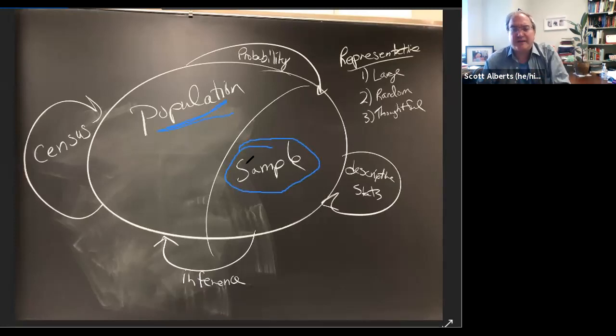Anyway, the first part of the class we've been thinking about descriptive statistics where we use the sample to just draw conclusions about the sample. So in the particular data set we have, 32% are red. We can find the mean and standard deviation of certain things and we can go from there.